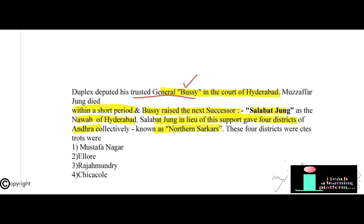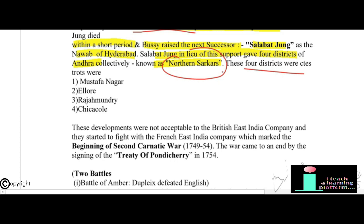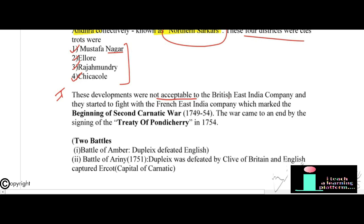Salabat Jang, in return for French support, gave four districts of Andhra collectively known as the Northern Sarkars — Mustafanagar, Ellore, Rajahmundry, and Chicacole. These developments were not acceptable to the British East India Company, and they began fighting the French East India Company, marking the beginning of the Second Carnatic War (1749–1754). The war came to an end by the signing of the Treaty of Pondicherry in 1754.